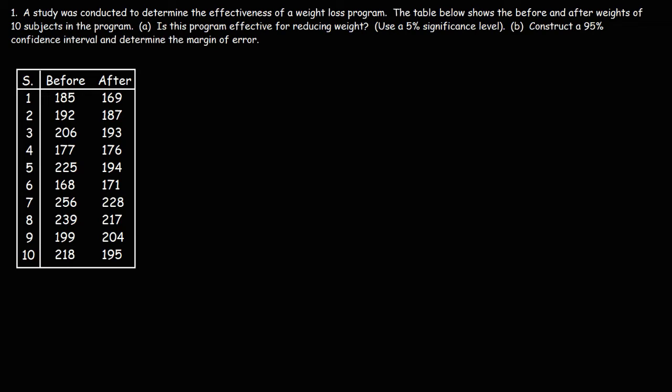In this video, we're going to talk about how to solve problems when you have a matched or paired sample. A matched or paired sample occurs when you're measuring two things with the same group of people. In this case, it could be the before and after weight of a weight loss program. A study was conducted to determine the effectiveness of a weight loss program. The table below shows the before and after weights of 10 subjects. Is this program effective for reducing weight? Let's find out using a 5% significance level.